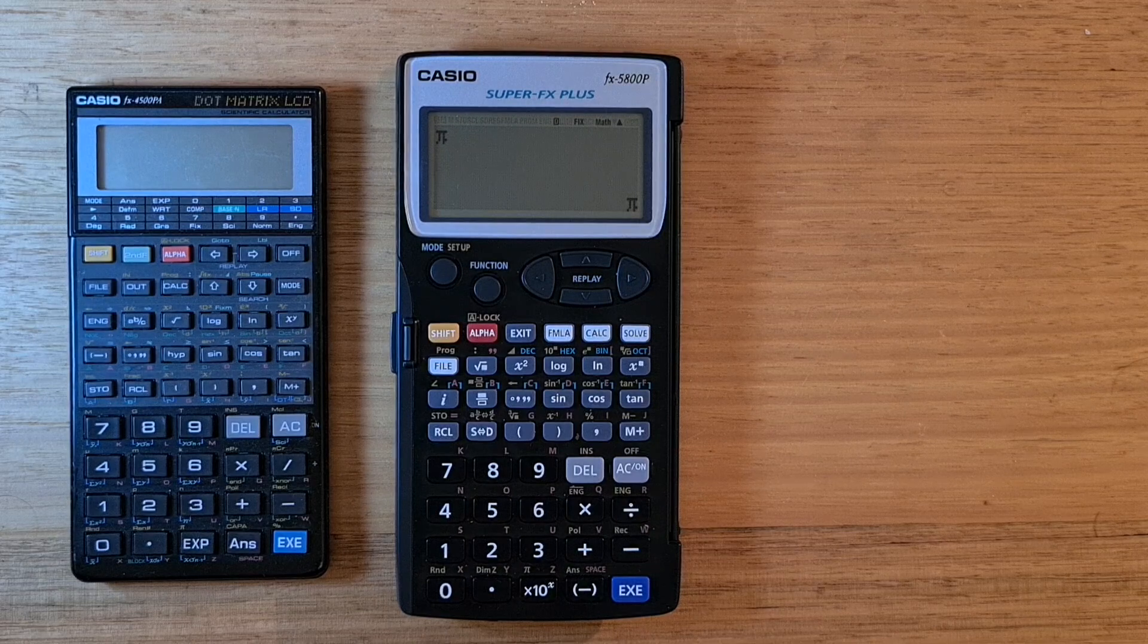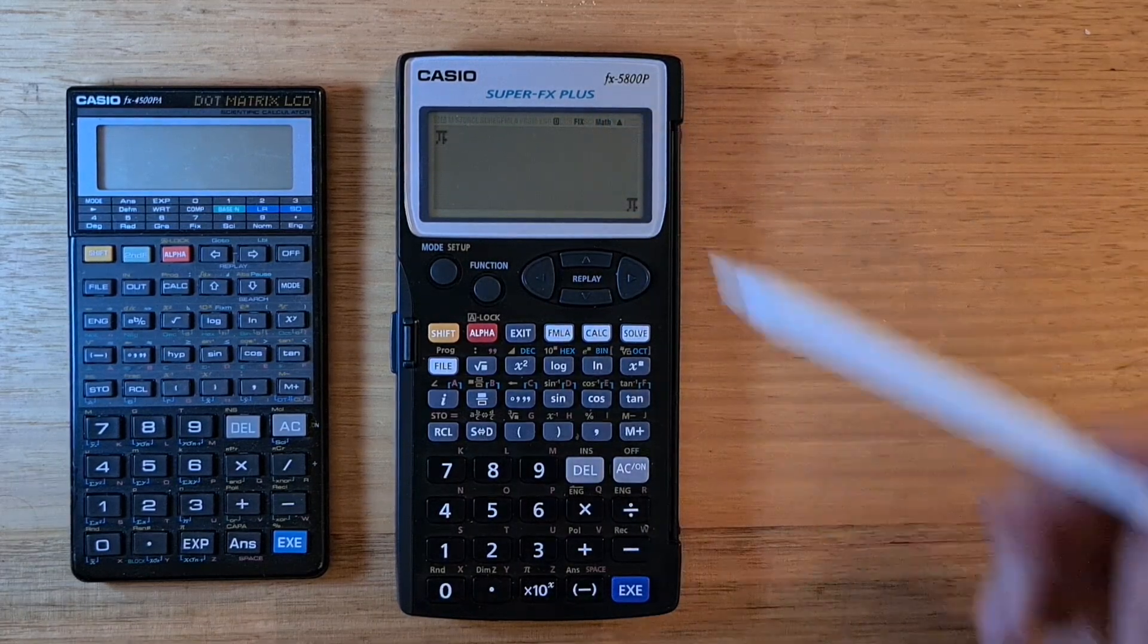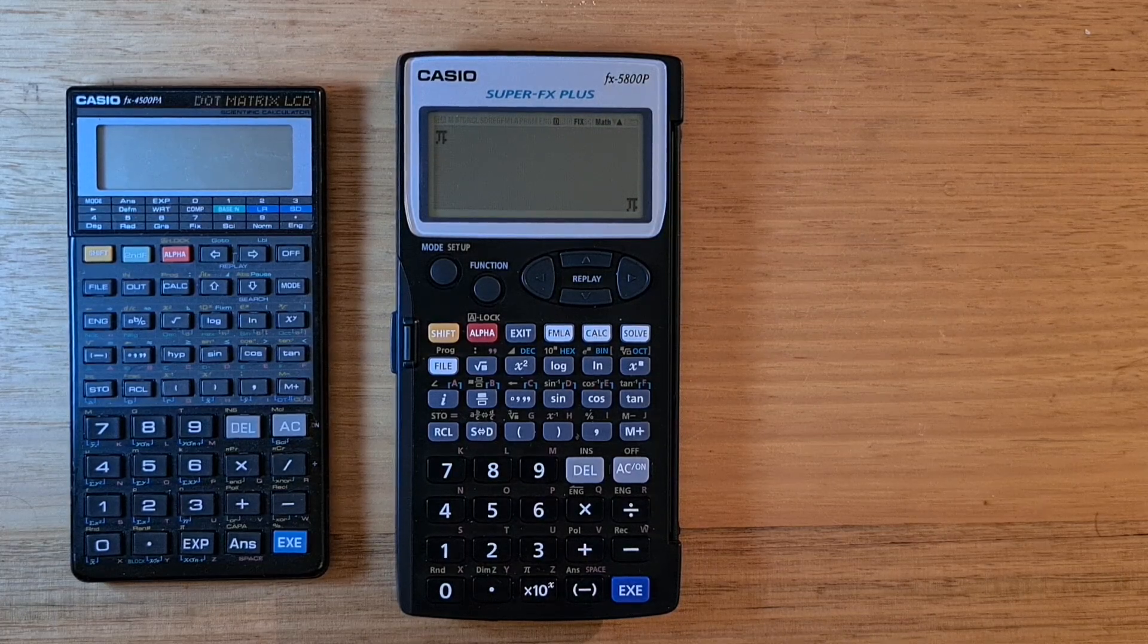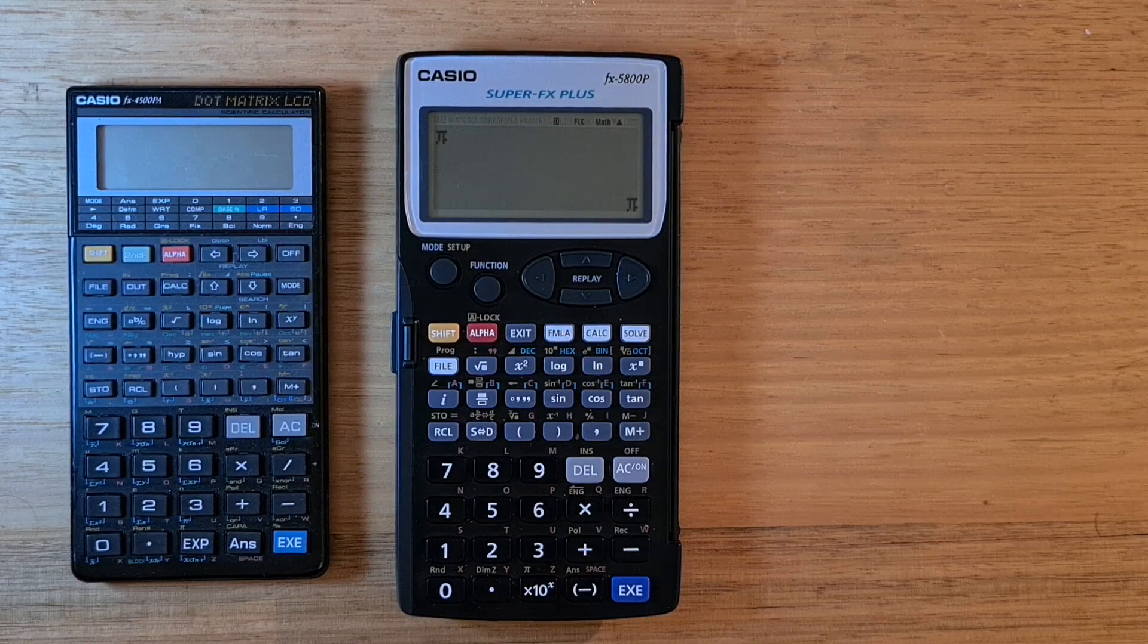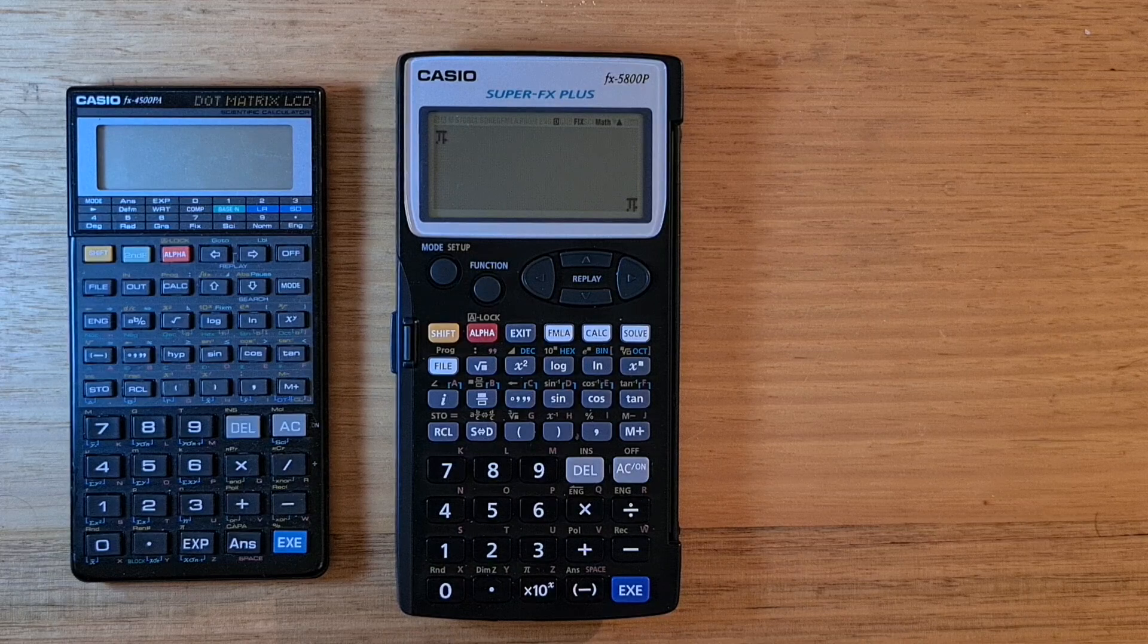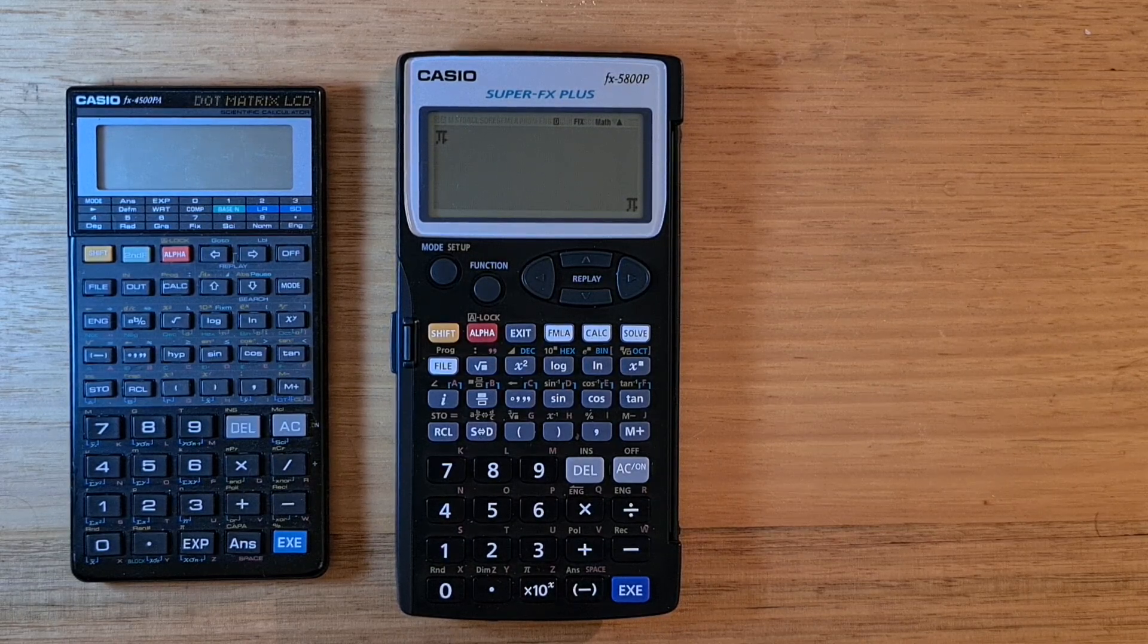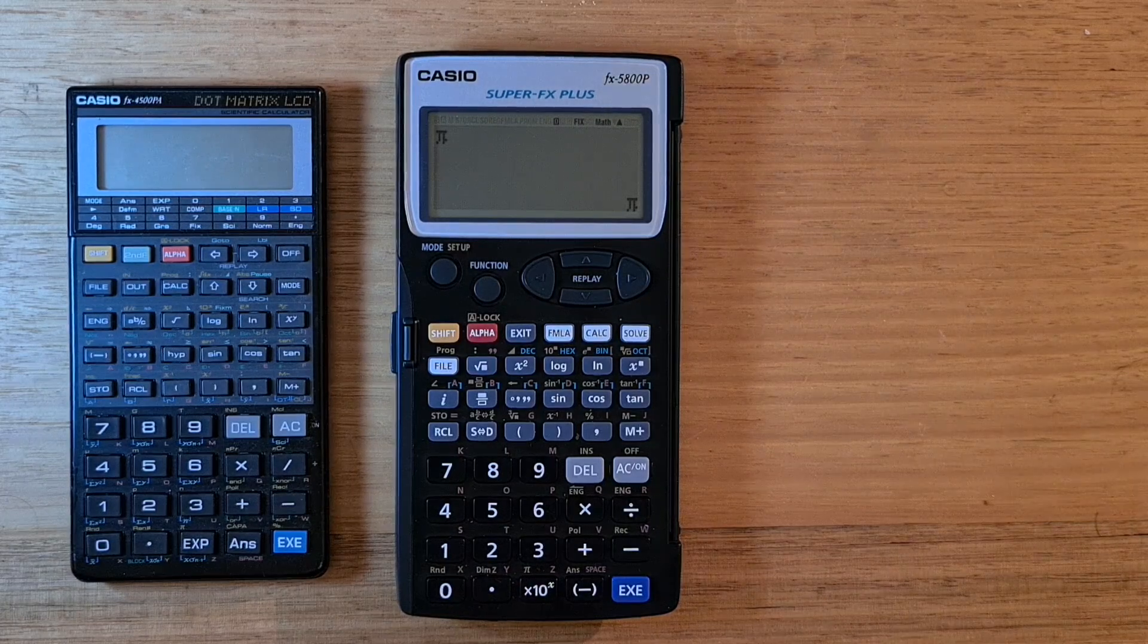And the 5800P has a Super FX Plus label on it, and I'm actually not sure what this means specifically, but I know that Casio added the Super FX label to a number of its more advanced FX series calculators since the early 90s. As we'll see, the 5800P is a pretty fully-featured calculator for science and engineering.